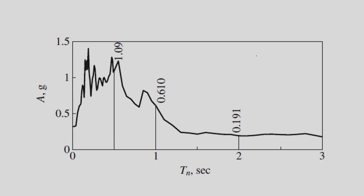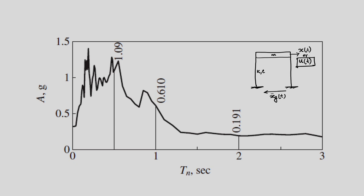We have a single degree of freedom system where the mass is m, and then collectively two columns offer some lateral stiffness and damping. We have a ground excitation x_g double dot of t. We defined both absolute deformation and relative deformation with respect to ground. We used the relative deformation to find out the response, and from that we evaluated the maximum response — it may be displacement, velocity, or acceleration.